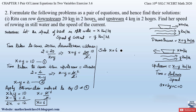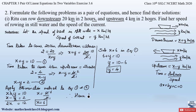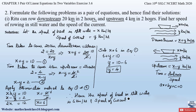Substituting x = 6 into equation 1: 6 + y = 10, so y = 10 − 6 = 4. Since x is the speed of the boat in still water and y is the speed of the current, the speed of the boat in still water is 6 kilometers per hour and the speed of the current is 4 kilometers per hour.